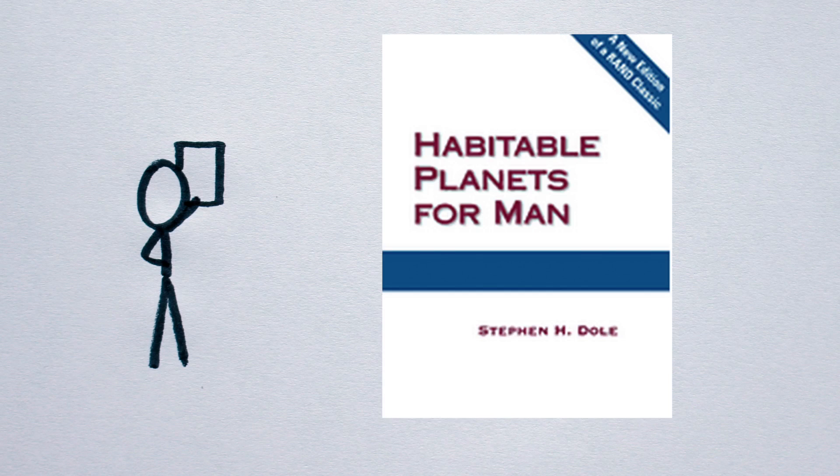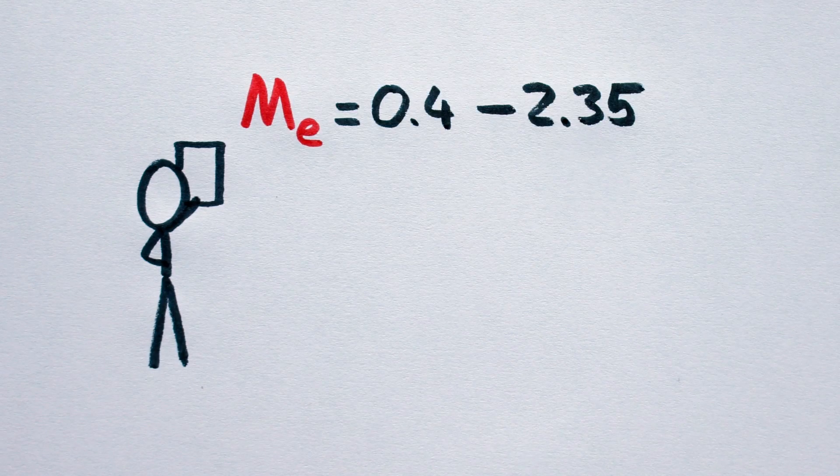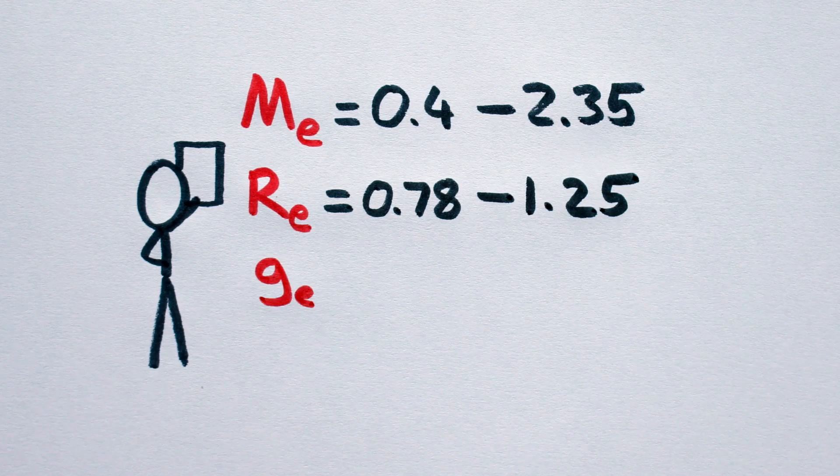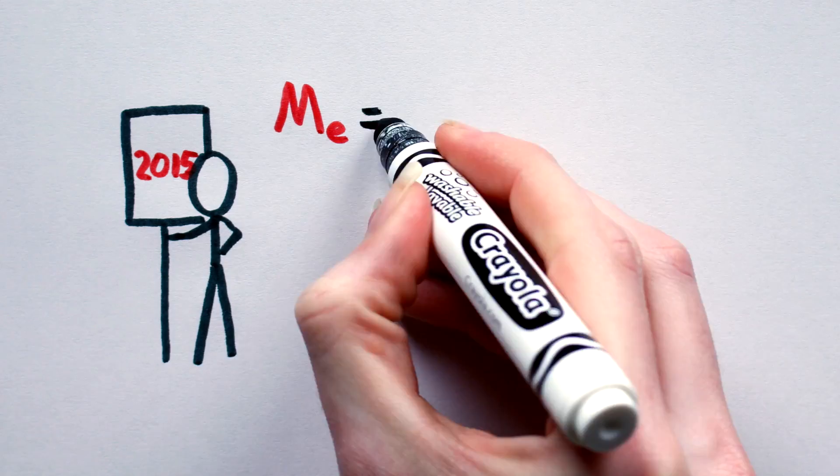Stephen Dole in his 1964 work Habitable Planets for Man sets the ranges for habitable Earth-like planets at 0.4 to 2.3 Earth masses, 0.78 to 1.25 Earth radii, and a surface gravity of 0.68 to 1.5 times the gravity at Earth. These values are fine,